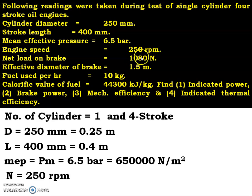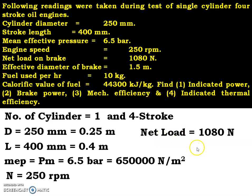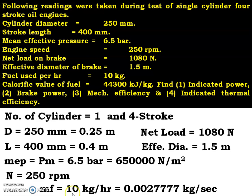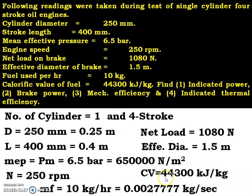Engine speed N = 250 rpm. Net load on brake, that is effective load W minus S = 1080 Newton. Effective diameter of brake = 1.5 m. Fuel used per hour MF = 10 kg/hour, converting into kg/s: 10 divided by 3600 = 0.002777 kg/s. And the last one: calorific value of fuel CV = 44,300 kJ/kg. We have to calculate IP, brake power, mechanical efficiency, and indicated thermal efficiency.